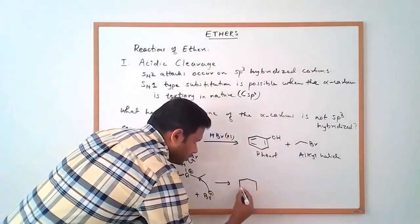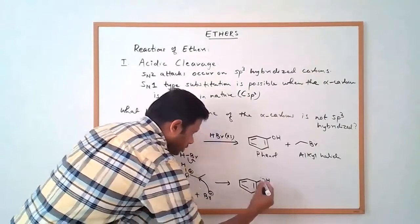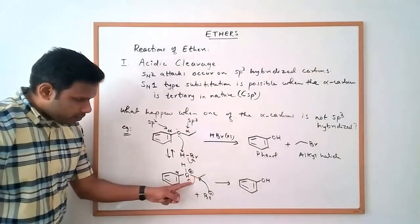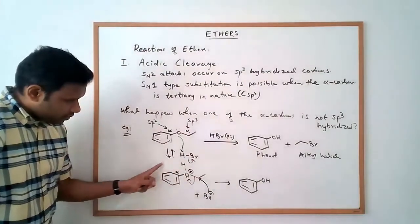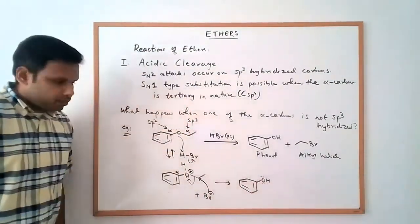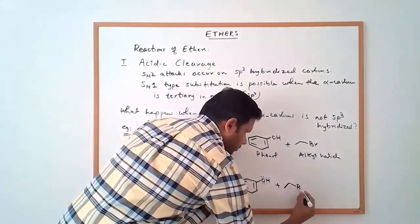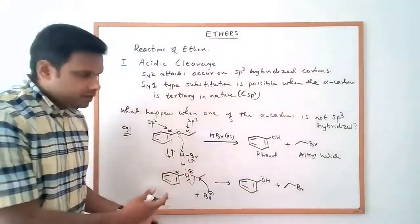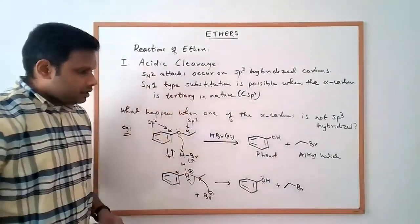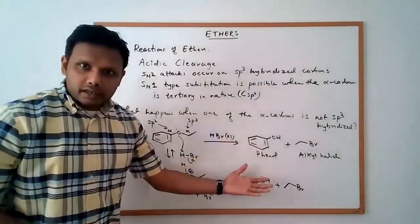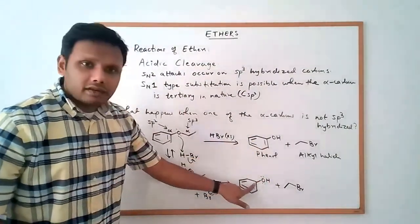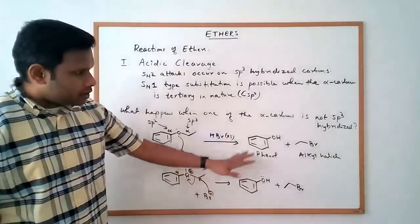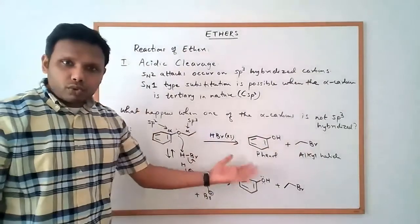The bromide attacks the sp3 alpha carbon, the C–O bond breaks and the bond electrons become a lone pair on the oxygen, giving us phenol plus ethyl bromide. Now, beyond this step, the oxygen can get protonated, but the halide will not attack that sp2 alpha carbon. So the reaction basically stops right here, and your products are only the phenol and the alkyl bromide — one alkyl bromide and one phenol.